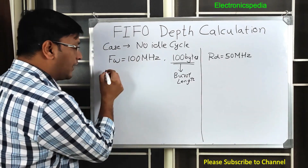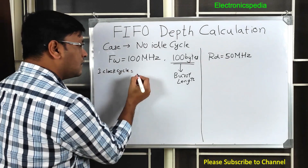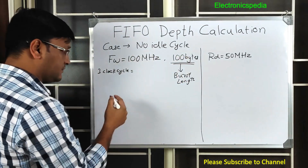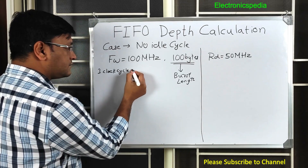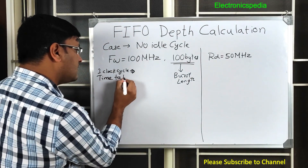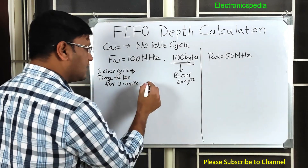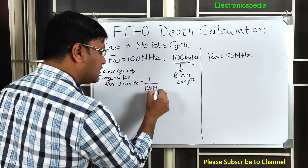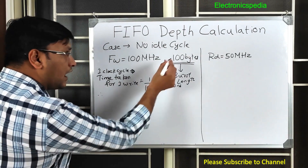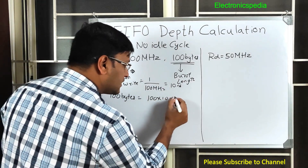At 100 MHz, we transfer one byte per clock cycle, so we need 100 clock cycles to transfer 100 bytes. Time taken for one write = 1 / 100 MHz = 10 nanoseconds. Therefore, to transfer 100 bytes of data you need 100 × 10 = 1000 nanoseconds.